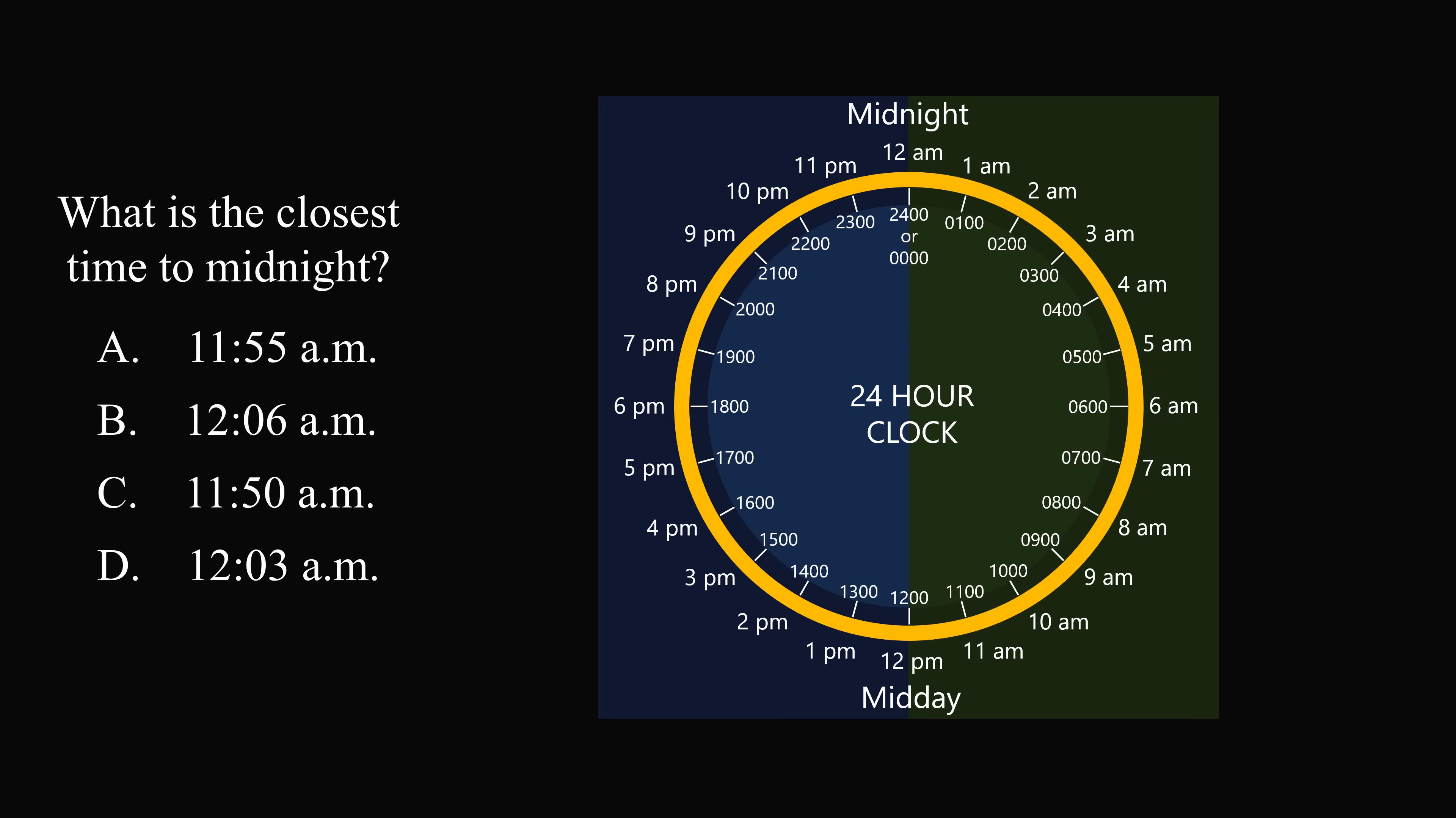So let's put each of these times on this 24-hour clock. Now we just need to know a few of the hours, so we can use a simplified version. Now, answer choices C and A are going to be close to 12 noon. So this will be the times 11.50 a.m. and 11.55 a.m. Then we have answer choices D and B, which are going to be close to midnight.